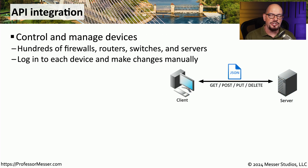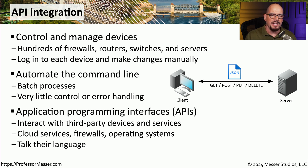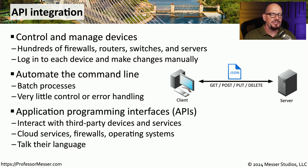Sometimes you need to make changes to hundreds or even thousands of different devices. You could automate this at the command line using scripts and batch files, but because this operates at the command line, you don't have a lot of control over the process if you run into problems. For that reason, you might want to use a more automated method using an API, or Application Programming Interface, which lets you connect and control a device using the language that device expects and also allows you to automate the process and set up additional error handling tasks.